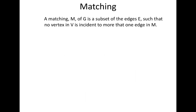Formally, a matching M of a graph is a subset of edges such that no vertex is incident to more than one edge. That means we are looking for independent edges, because they have no endpoint in common.